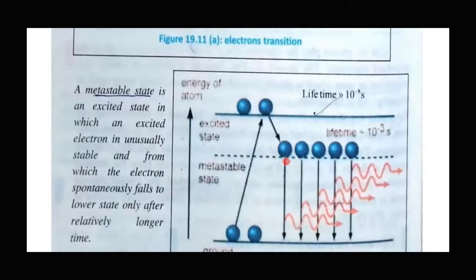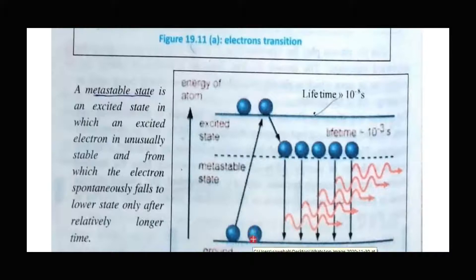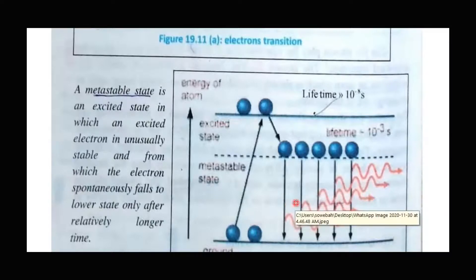To achieve population inversion, we need excited electrons to stay in the excited state. But if we use only two energy levels and excite electrons, they immediately start spontaneous emission because the lifetime of the excited state is only about 10 to the power of minus 8 seconds — very small. So the population of excited electrons in the upper state will not be stable with only two energy levels.